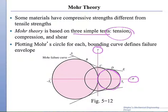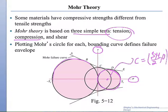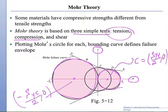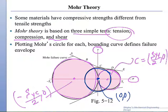The center of the circle is at coordinates: the x-coordinate is the yield strength in tension over 2, and 0. We also have a compression test, which gives us another circle, and the center of that circle is at minus S-yield in compression over 2, and 0. So we have these two limiting circles. If we also do a pure shear test, that gives us a third circle with its center at coordinates 0, 0. So we have three basic tests that define the failure in tension and compression.